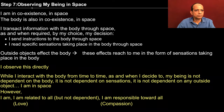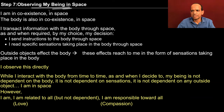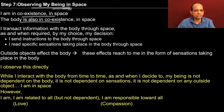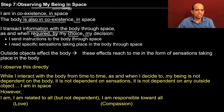In step 7 we are observing our being in space. So far we tried to observe the consciousness and the material. Now we are trying to observe the space, which is unlimited and all-pervading. I am in coexistence in space; the body is also in coexistence in space. I transact information with the body through space as and when it is required, by my choice, by my decision.